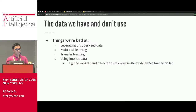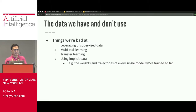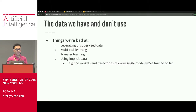Transfer learning is used a lot — taking a task with abundant data and using that information for a task you do care about. But despite its successes, what we do is the dumbest approach: just chop up a network, use half of it, and stick another network on top. It's very un-nuanced and you inherit all the downsides of the original network, including heavy computation. There's also the implicit data we don't use: the weights and trajectories of every model we've trained. If we're training a model, why retrain from scratch? We've already trained models that discovered information along the way. People are starting to get a feel for this but not really actively using it.